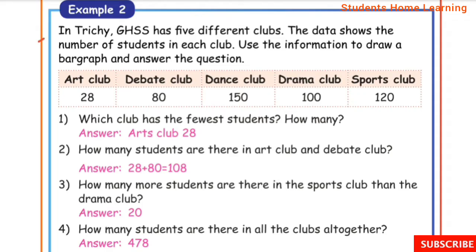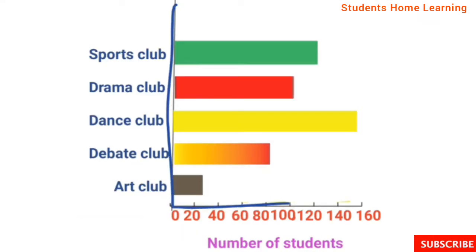Example 2: In Trichy Girls High Secondary School there are 5 different clubs. The data shows the number of students in each club. Use the information to draw a bar graph. Numbers go up to 150, so plot from 0 to 160. Art club: 28 students, bar up to 28. Debate club: 80 students, bar up to 80. Dance club: 150 students, bar up to 150. Drama club: 100 students, bar up to 100.